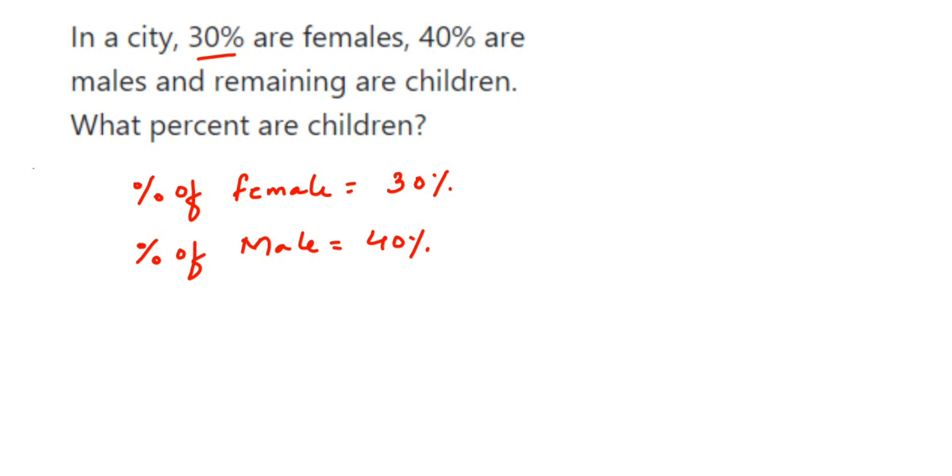Therefore, percentage of children will be: from 100% you have to remove 30% and 40%. Now 30 and 40, minus 30 minus 40, they have the same sign. Same sign means we do addition, so it becomes 30 plus 40 equals 70, so minus 70. 100 minus 70 is 30.